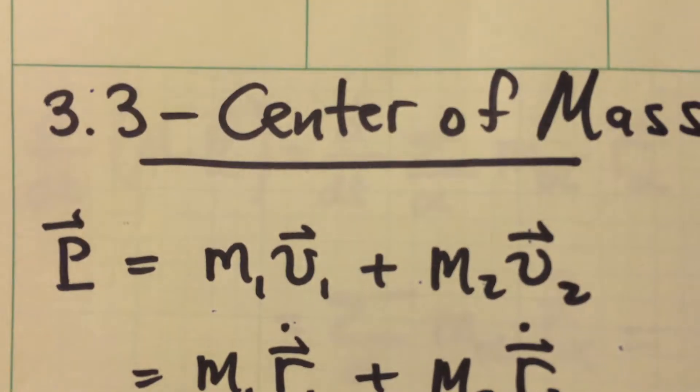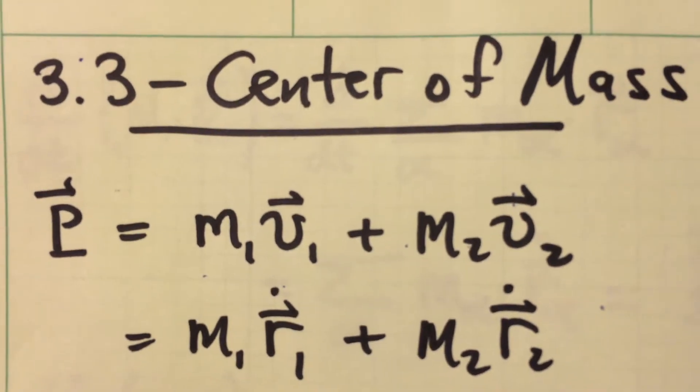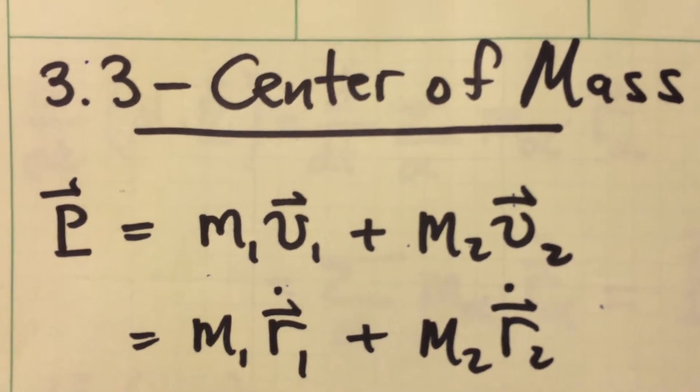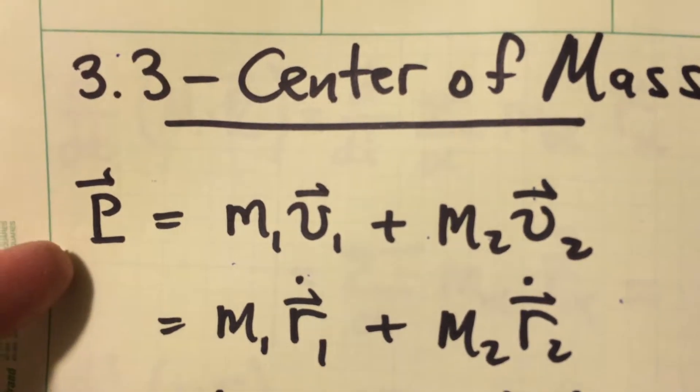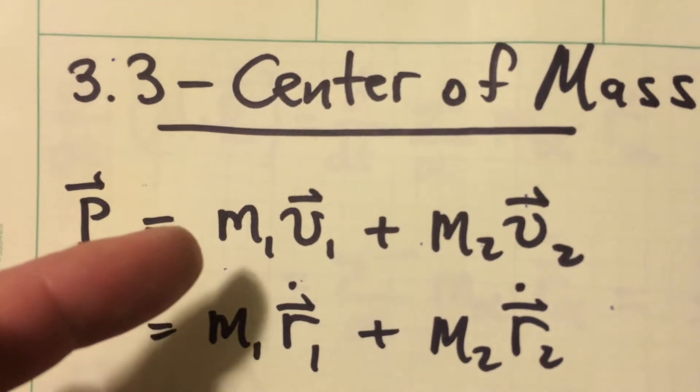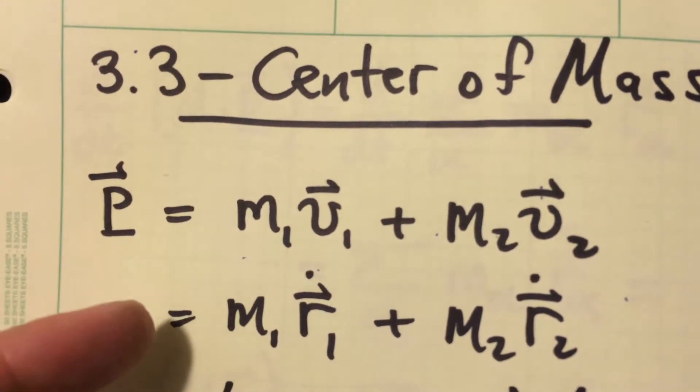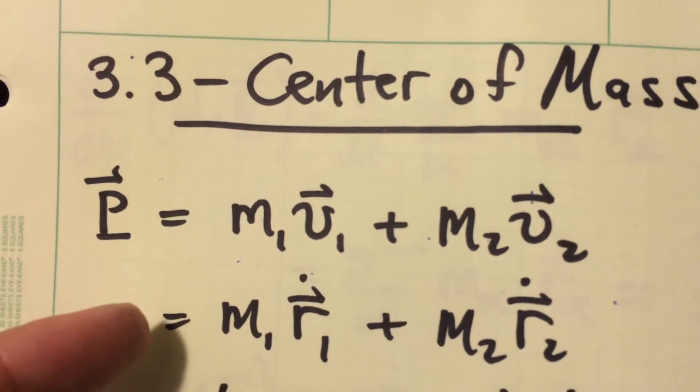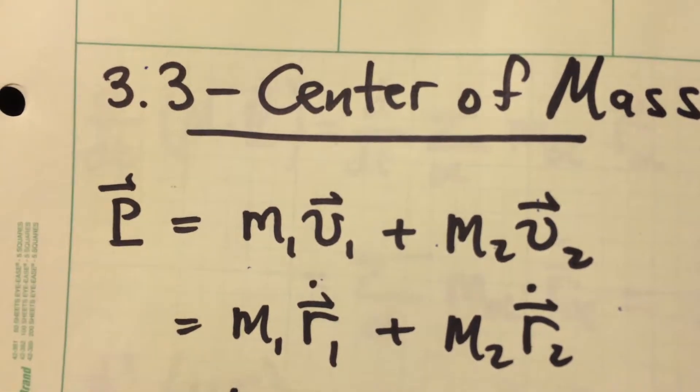So we'll begin again with looking at the momentum expression for a system of two particles. Here's the total momentum of that system. The total momentum, of course, is the sum of momentum for each of the individual particles, which can be rewritten as m1 r1 dot vector plus m2 r2 dot vector.